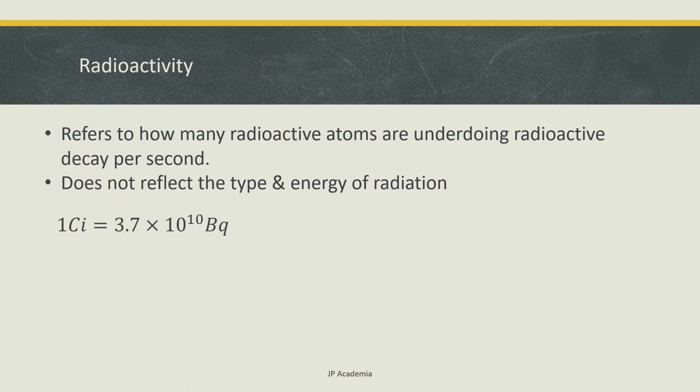Let's start by defining radioactivity. It refers mainly to how many radioactive atoms are undergoing radioactive decay per second. Also, it does not reflect the type and energy of radiation. The common unit for radioactivity is curie with the symbol Ci, and 1 curie is equal to 3.7 times 10 to the 10th disintegrations per second or becquerel. A disintegration refers to an atom undergoing radioactivity.